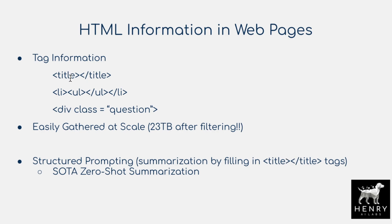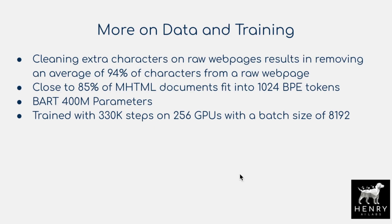So you imagine you scrape the whole internet and get all these articles where the title is contained in HTML title tags, and then you have the body tags and so on. Using this prompting with title tags, they achieve a new state of the art in zero-shot summarization and show overall benefits of training on HTML data in addition to plain text from web scrapes.